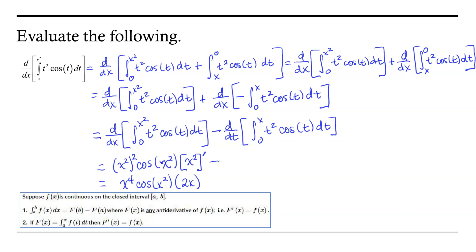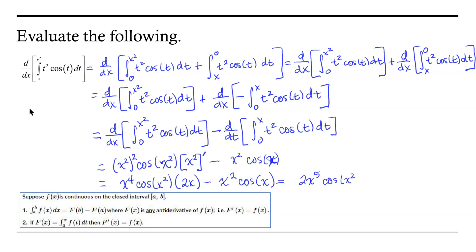Focusing on the second term: this integral matches the structure of the fundamental theorem of calculus directly, so we substitute x for t in the integrand. That gives x squared times cosine of x. Simplifying the first term, x to the fourth times cosine of x squared times 2x becomes 2x to the fifth cosine of x squared, minus x squared cosine of x.